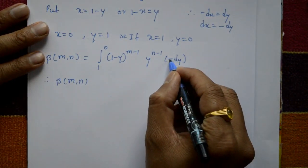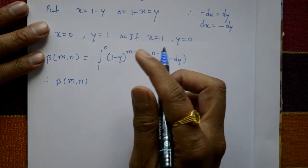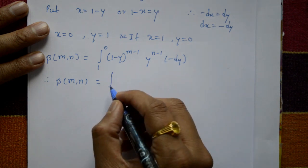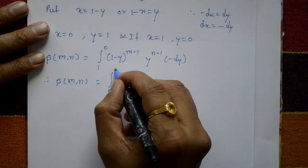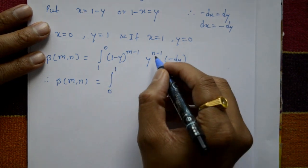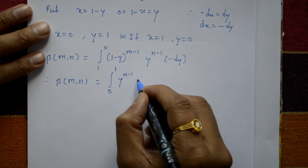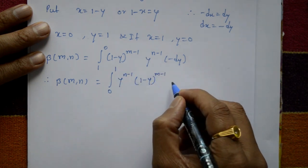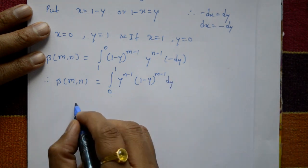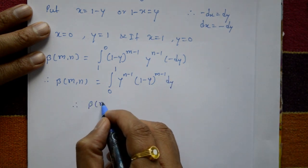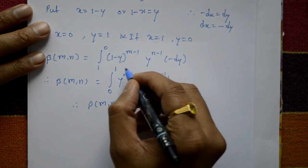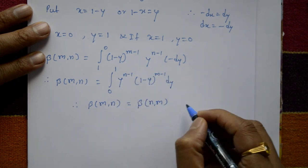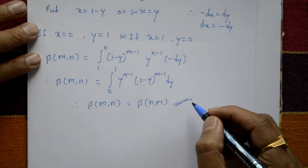The minus signs cancel, and after simplification we get beta of m,n equals the integration of y raised to n minus 1 into 1 minus y raised to m minus 1 dy, which is exactly beta of n,m. This completes the proof of the required property.